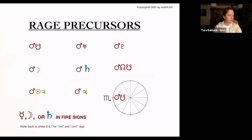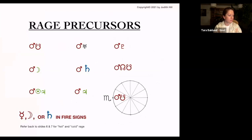We're at 3:17. Do we have any other slides here? So rage precursors - when you see this, can happen by transit or if it's chronic in the natal chart. If you have one of these close conjunctions, these can produce rage.